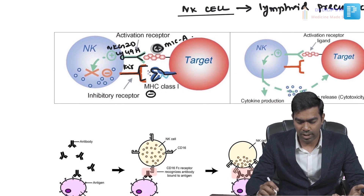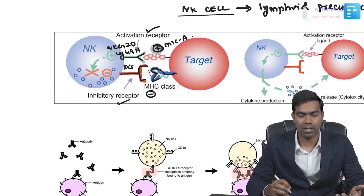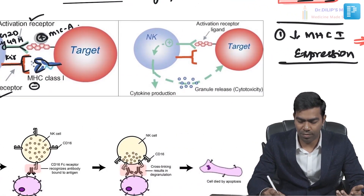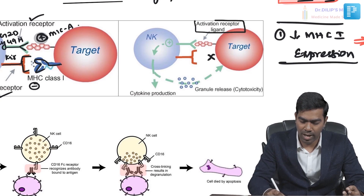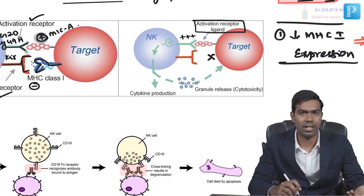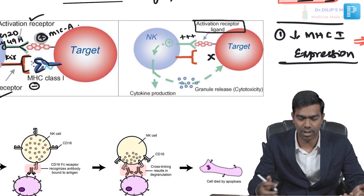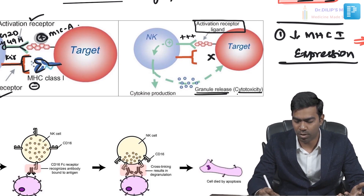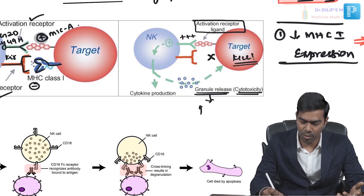If both activating and inhibitory receptors are present, nothing will happen. If MHC class 1 expression is absent, only the activating interaction remains — the NK cell is activated with no inhibitory signal, so it releases its granules and produces cytotoxicity, killing the target cell.